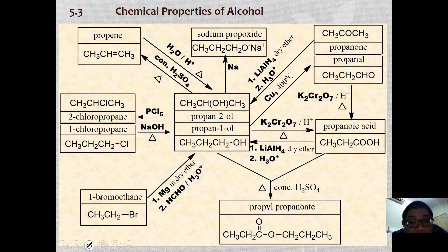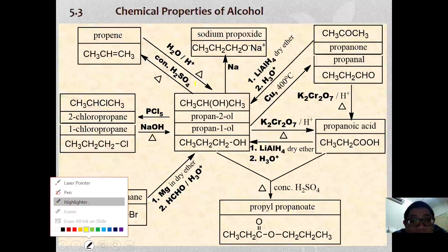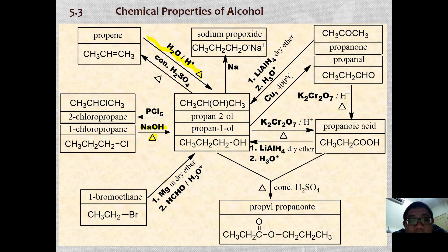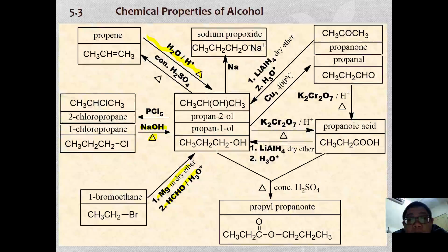There are a few ways to prepare alcohols. The one we have learned previously is that alcohol can be prepared via hydration of alkene. Alcohol can also be prepared via the hydrolysis of haloalkane, and we can also make use of the Grignard reagent to produce different classes of alcohols. These are generally the three ways to prepare alcohol.